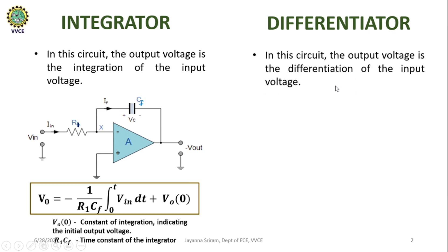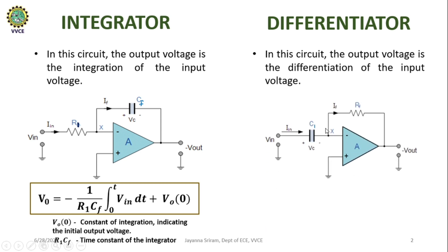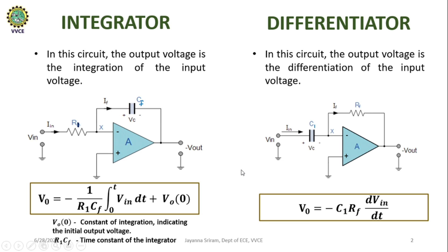Similarly, let us consider the differentiator. In this circuit, the output voltage is the differentiation of the input voltage. This is the circuit diagram representation of the differentiator where the resistor is used as feedback, and the input voltage VIN is applied to the inverting terminal through capacitor C1. The non-inverting terminal is grounded. The output voltage expression for the differentiator shows the output is the differentiation of the input voltage. The negative sign indicates the output will be inverted since we are applying input to the inverting terminal. Here C1 into RF represents the time constant of the differentiator.